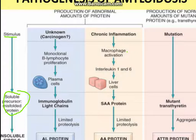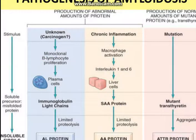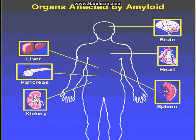In AL variety pathogenesis, an unknown carcinogen leads to plasma cell dyscrasia — monoclonal B lymphocyte proliferation, multiple myeloma — producing immunoglobulin light chains and increased AL protein. In chronic inflammation, macrophage activation and elevated interleukins 1 and 6 increase SAA protein, leading to AA deposition. Additionally, a mutation in transthyretin produces mutant transthyretin, leading to further amyloid deposition.